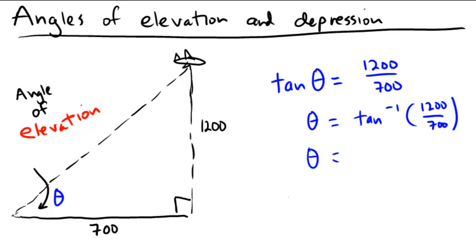So now, just grabbing a calculator on the side here, I'm doing the second option on the tangent, which is arc tangent. 1200 over 700. And the calculator is giving me to two decimal places, the answer 59.74 degrees. So the angle of elevation from the ground to the airplane is 59.74 degrees.